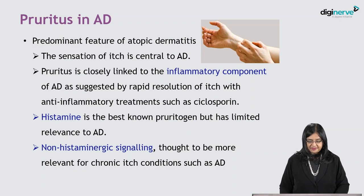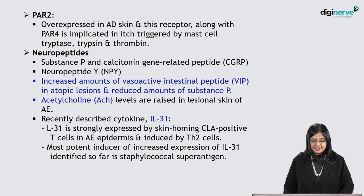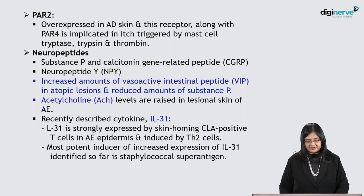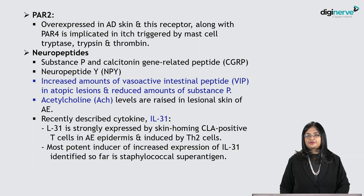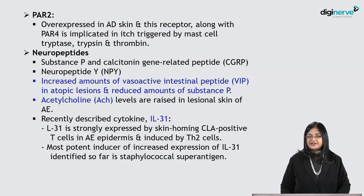Non-histaminergic signaling is thought to be more relevant for chronic itch conditions such as AD. PAR2 is over-expressed in AD skin, and this receptor along with PAR4 is implicated in itch triggered by mast cell tryptase, trypsin, and thrombin. Regarding neuropeptides: substance P, calcitonin gene-related peptide, and neuropeptide Y are also relevant.